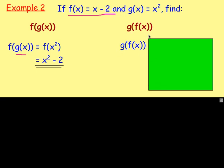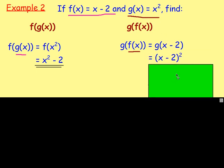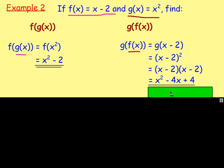Now find g(f(x)). Start in the middle: f(x) = x − 2. You cannot simplify x − 2, so it becomes g(x − 2). In function g, replace x with (x − 2): we get (x − 2)². Multiplying that out — times itself — gives x² − 4x + 4.